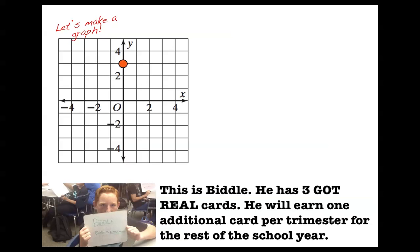All right, he's got 3 Got Real cards, and then after one trimester, he's going to have a 4th, and then after another trimester, he's going to have a 5th, and he could keep on going up and up and up.